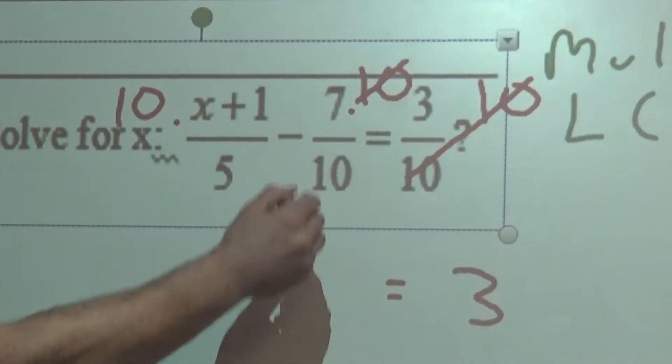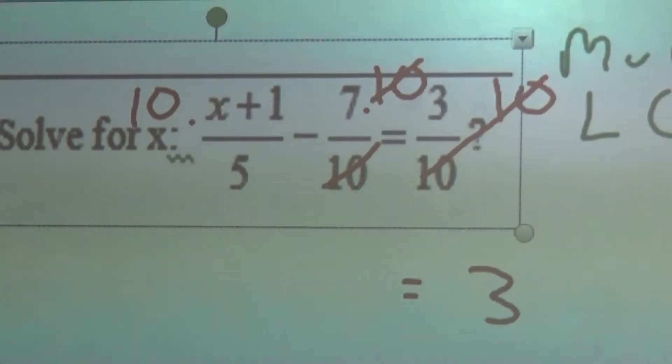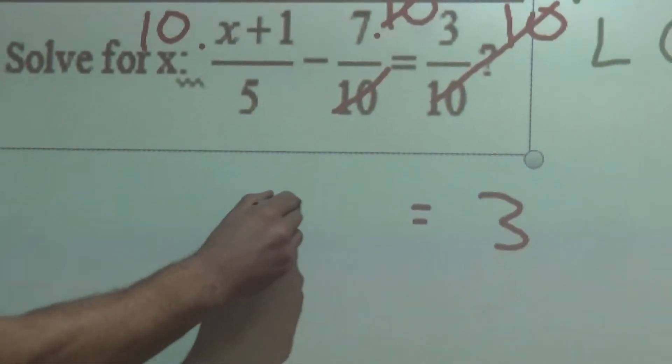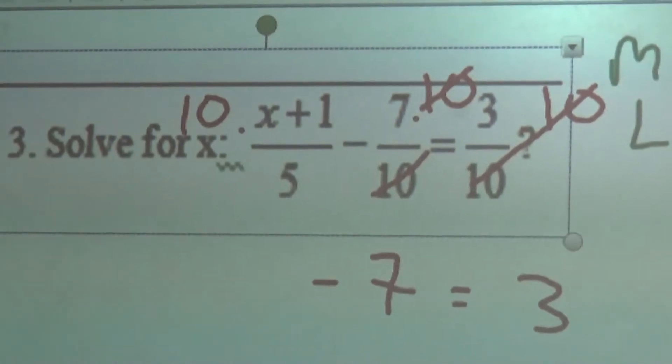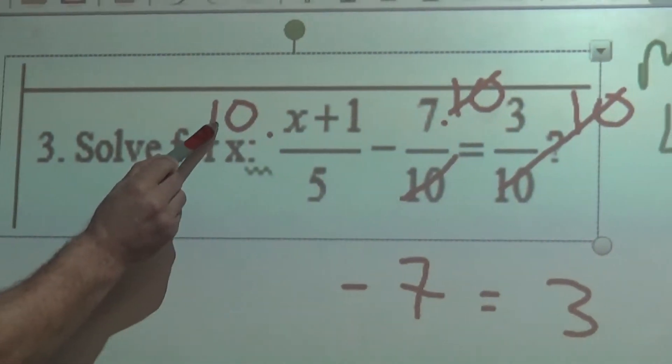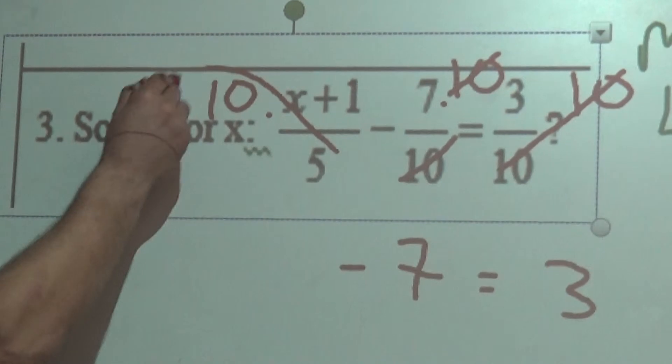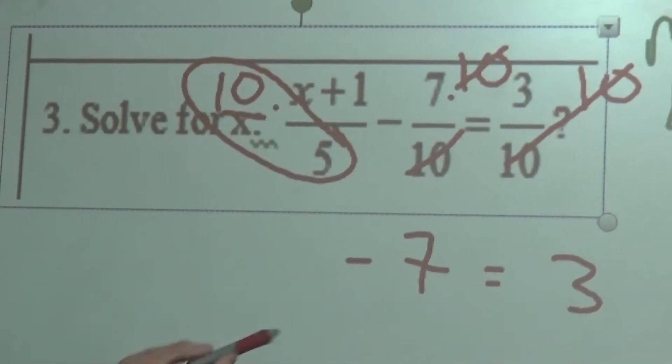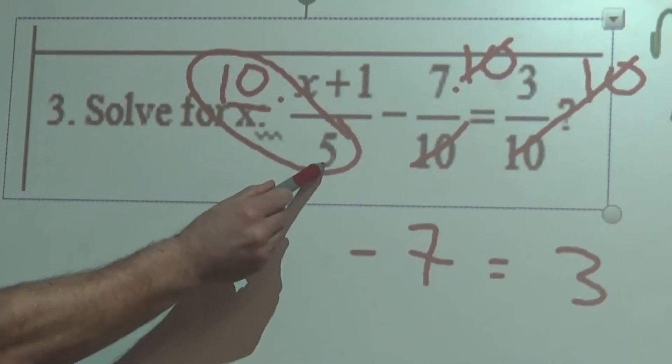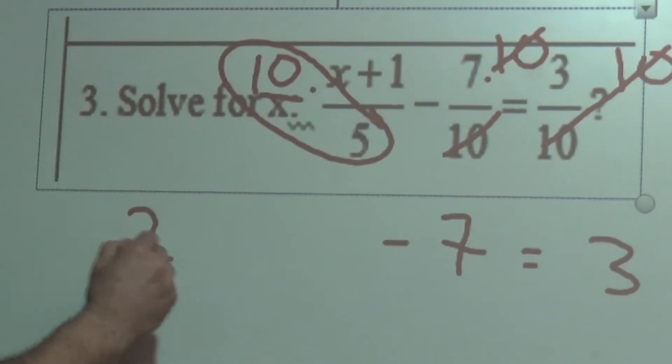Here, again, the 10 on top will cancel the 10 in the denominator. I'm left with minus 7. Now, this is a little bit tricky. The 10 doesn't cancel the 5, per se, but what we have here is 10 divided by 5, which leaves us with 2, and then we still have the x plus 1.